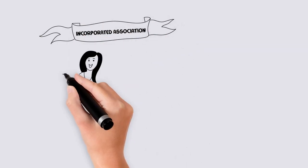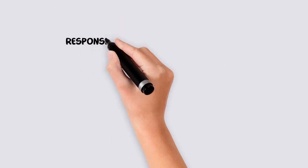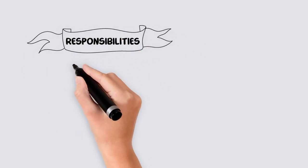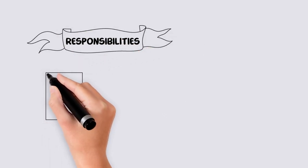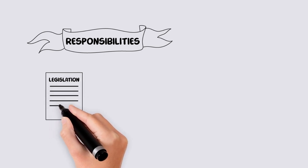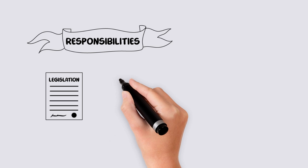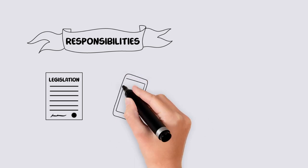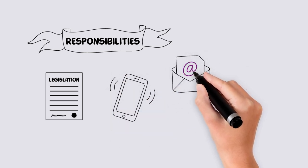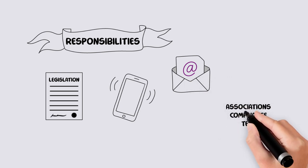Now that you are incorporated, what's next? As an incorporated association, you have responsibilities. These responsibilities are legislated and aimed at protecting the members and the committee of the association. If you are having trouble with any of your responsibilities, please contact the NT Government Association's Compliance Team for advice.